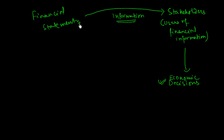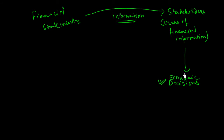The materiality concept says that the information which financial statements provide to stakeholders must be material — it should contain only facts which matter to the users of financial statements. It should not contain immaterial information, as that can cause confusion and ambiguity and can hinder economic decision-making. Only relevant and pinpoint information is required for stakeholders to make economic decisions.